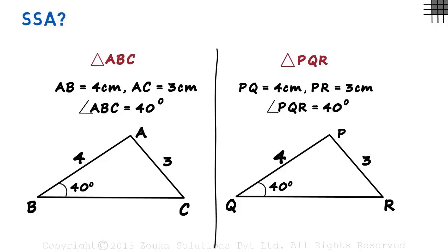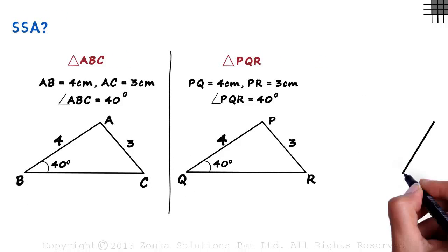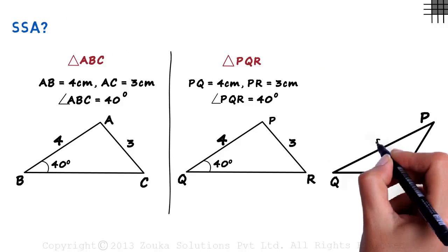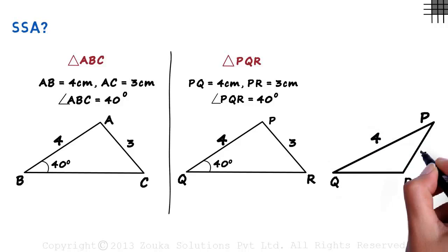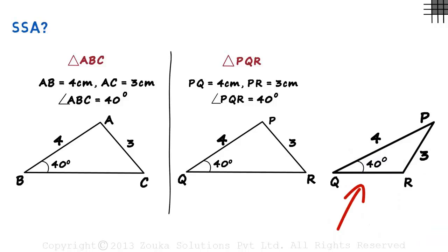But here's the interesting part. There is another way in which triangle PQR can be drawn. Like this. PQ is 4, PR is 3, and angle PQR is 40 degrees.